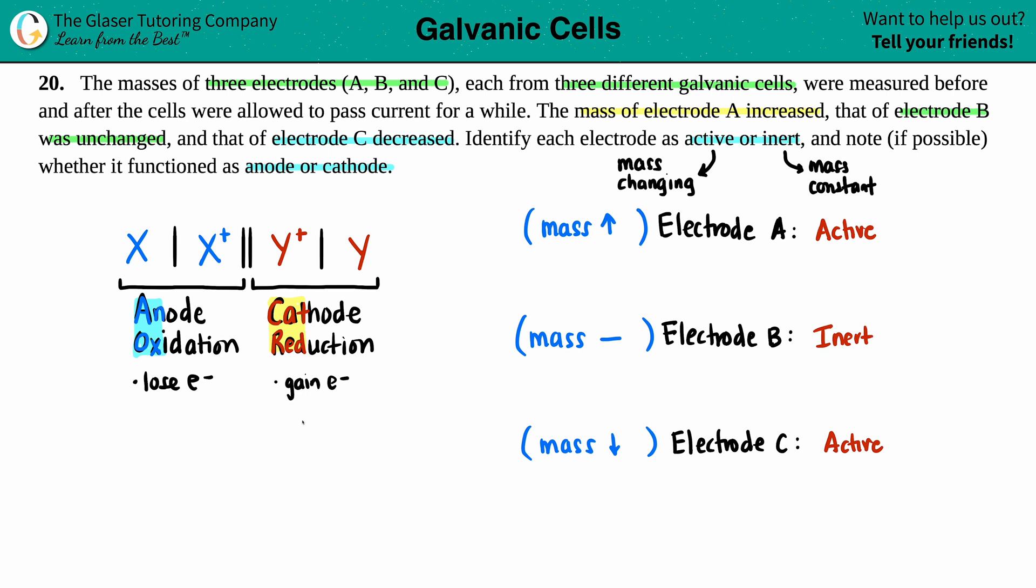Now in terms of mass, because they didn't say anything about electrons—they just said mass—remember you have electrons that are being either lost or gained. And even though electrons are very, very small and they have very minimal mass, they still have some mass. So if you're losing electrons, you're also losing mass. And on the flip side, if you're gaining electrons, you're gaining mass.